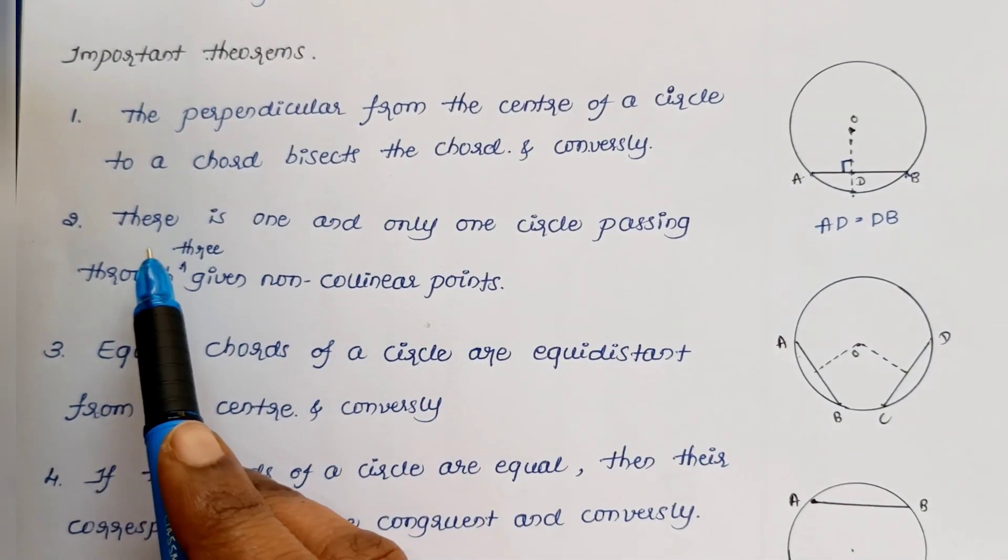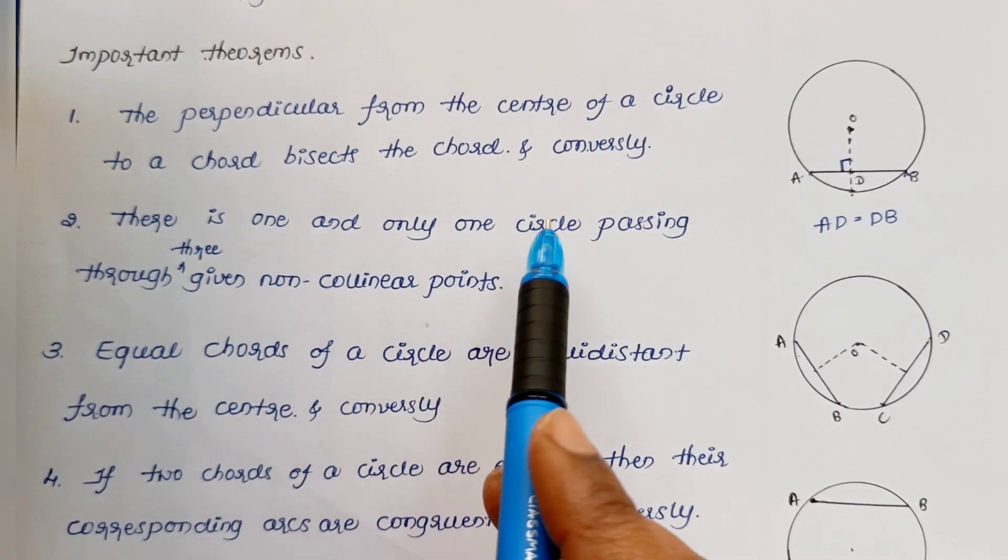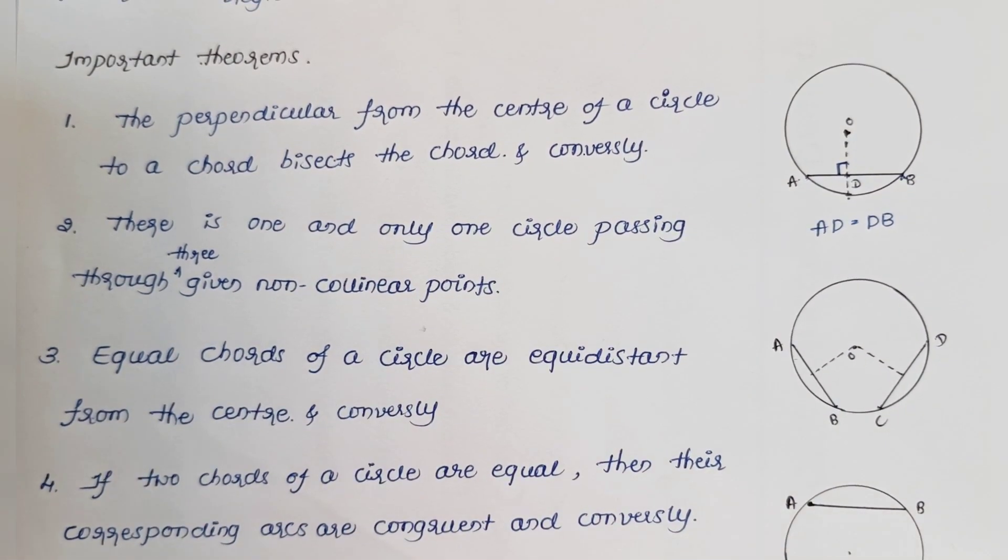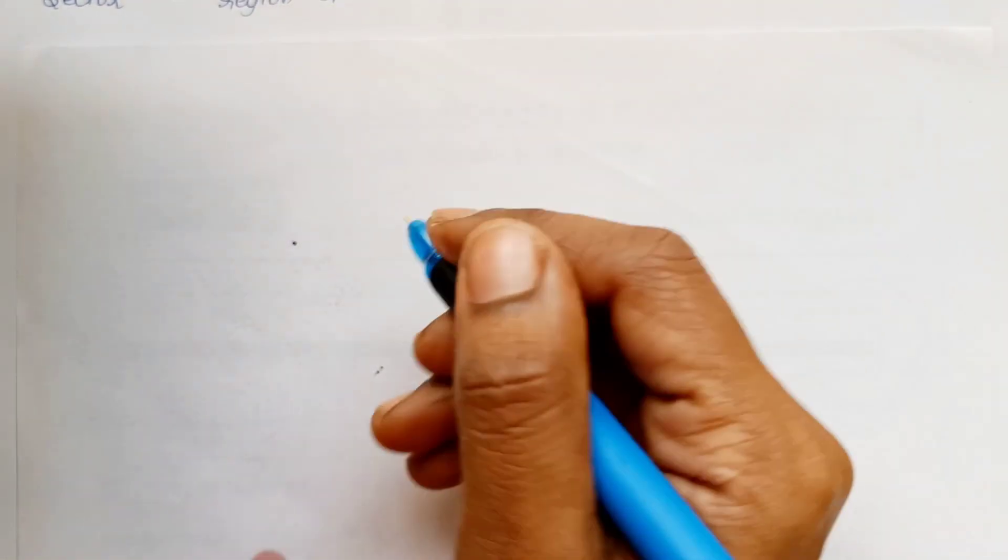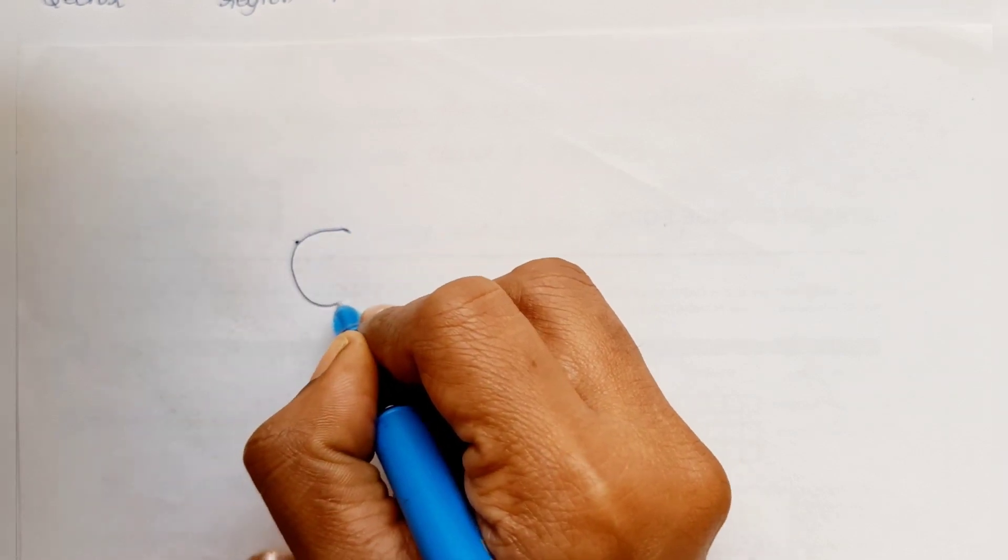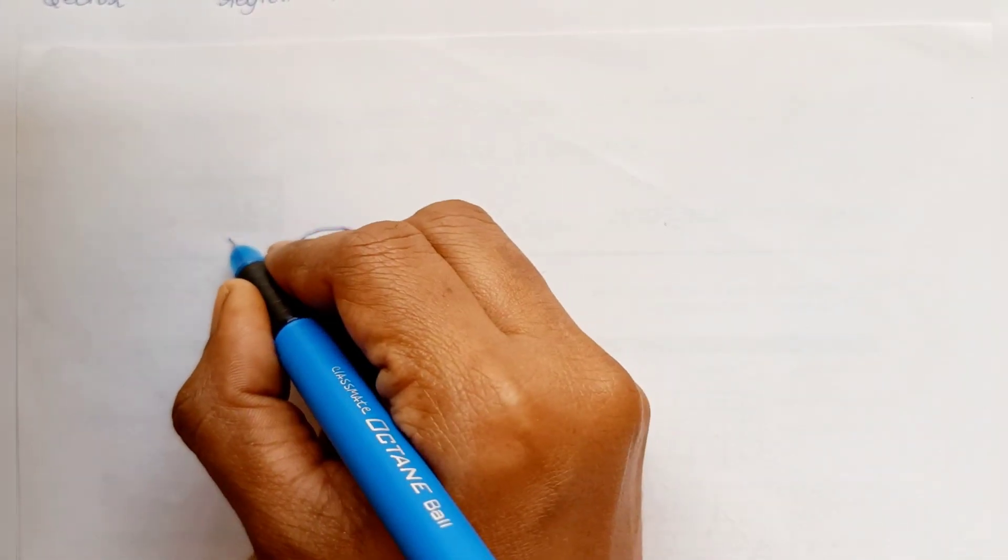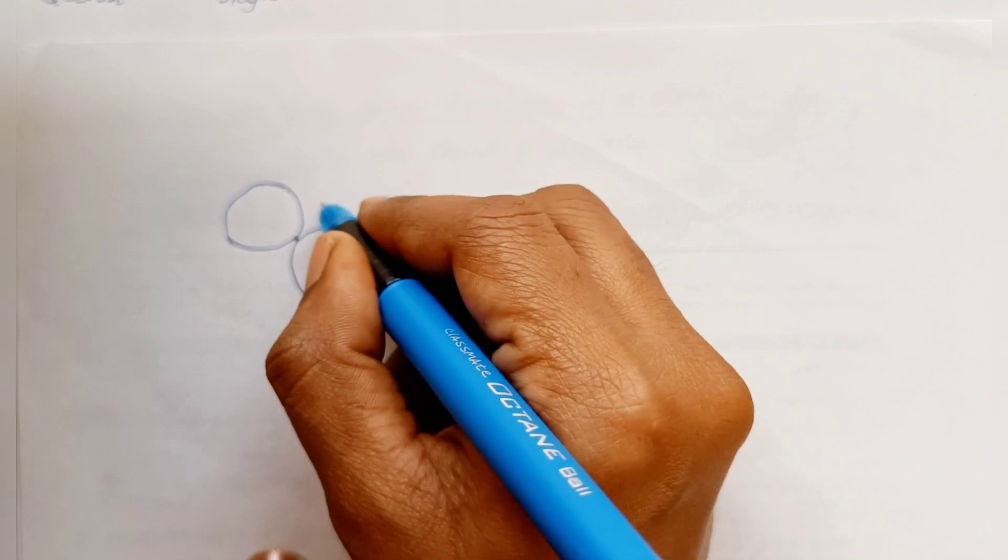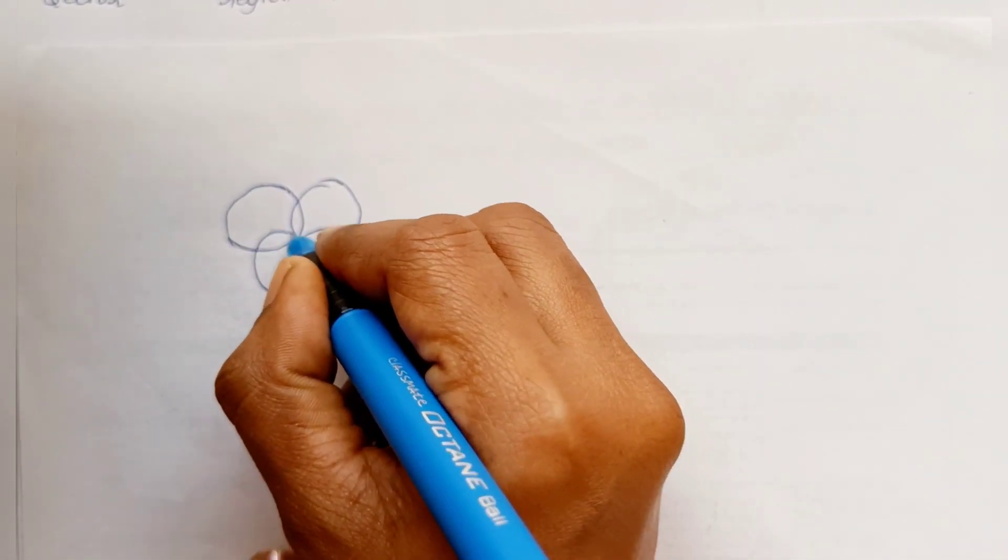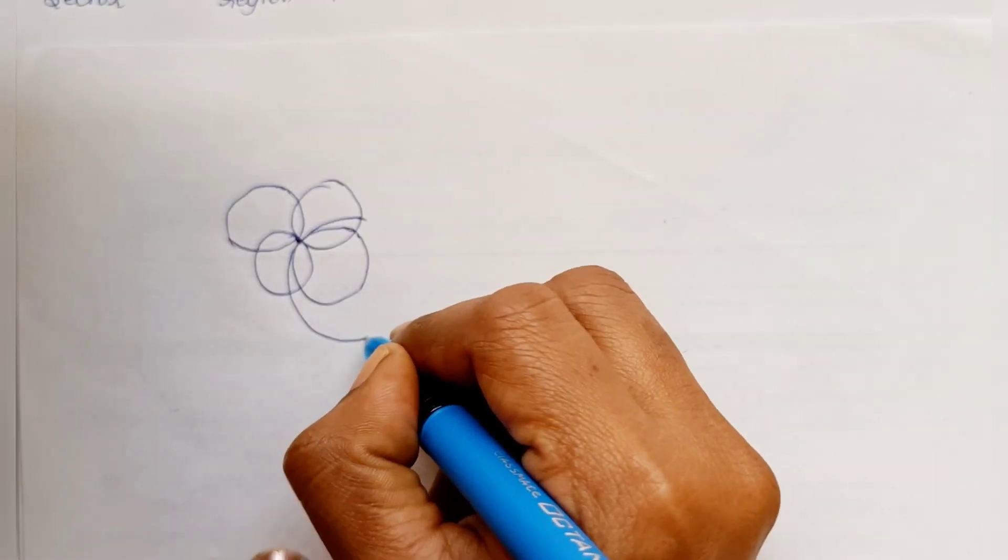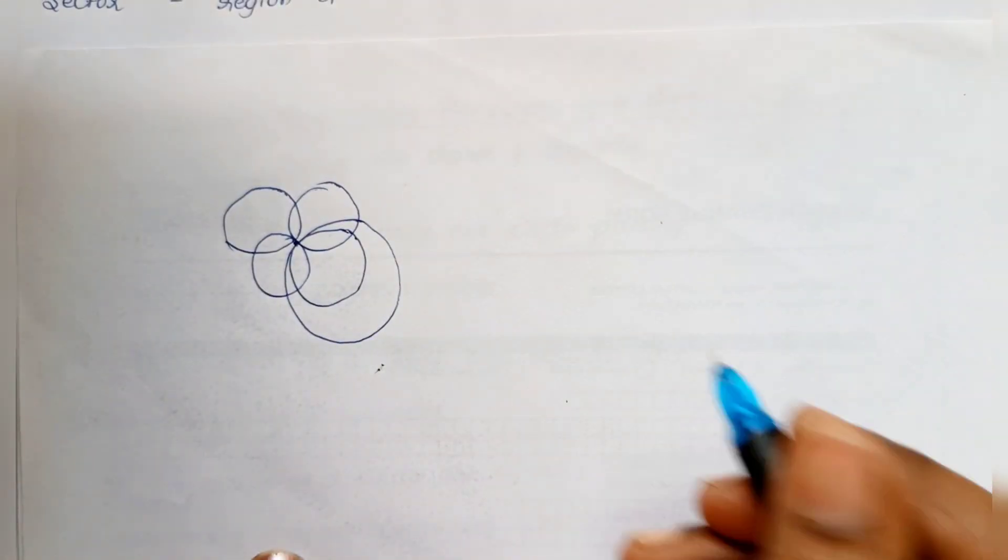Next one: there is one and only one circle passing through three given non-collinear points. For example, if we have one point, then we can draw so many circles passing through that point. If we have two points, then we can draw some circles like this.